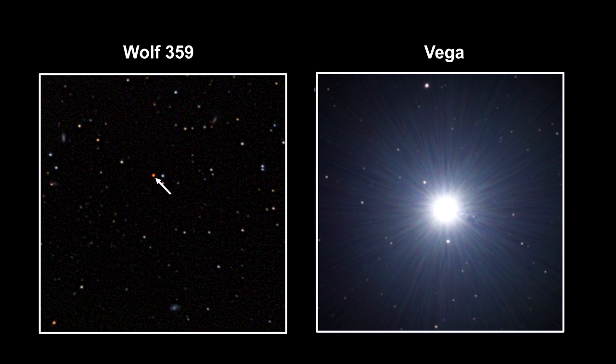So far, we've identified Wolf 359 as one of the least luminous stars in our neighborhood, and Vega as one of the most luminous, but we haven't been explicit as to what we mean by luminous.